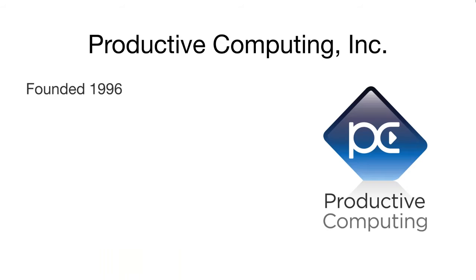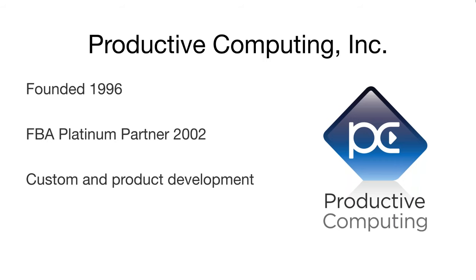I started with FileMaker in 1991 and later founded Productive Computing in 1996. Right from the start, we were using QuickBooks for all our accounting while using FileMaker for everything else. We became a FileMaker Business Alliance Platinum Partner in 2002, and everything we do here at Productive Computing is centered around FileMaker. Today, we help many customers automate their workflow with a wide variety of custom FileMaker applications, many of which include the incorporation of QuickBooks.